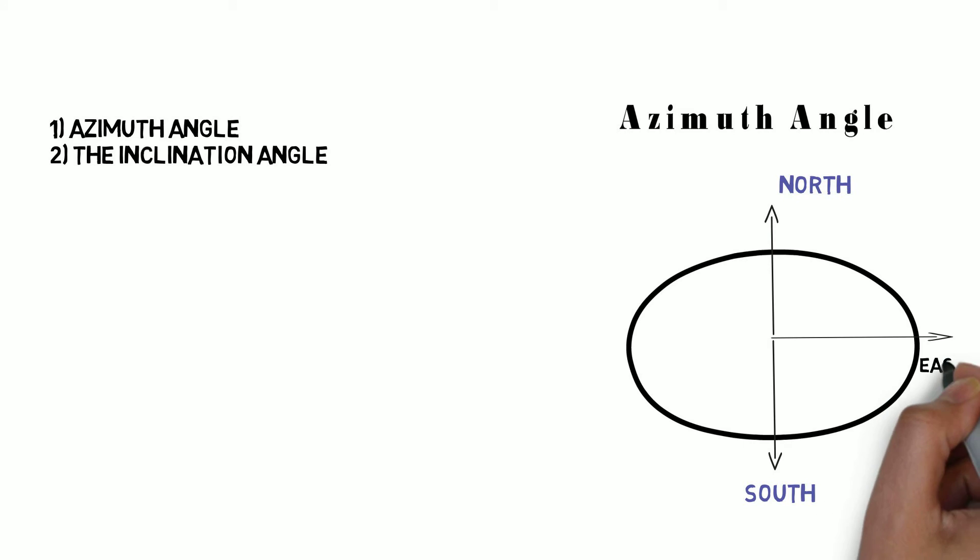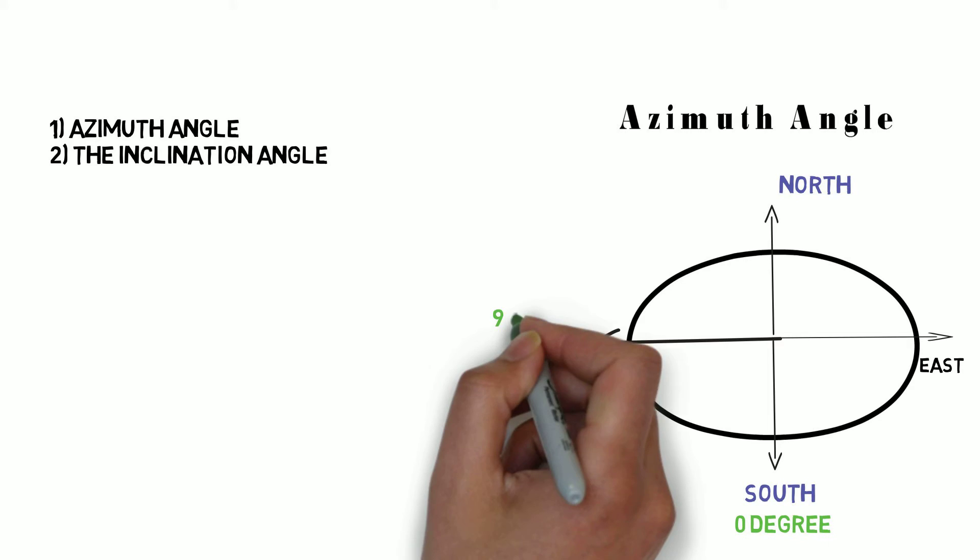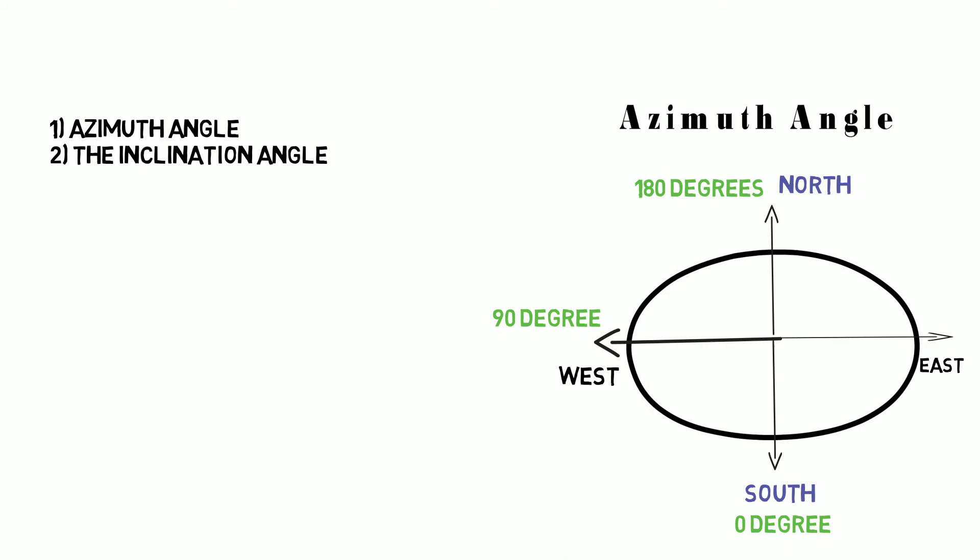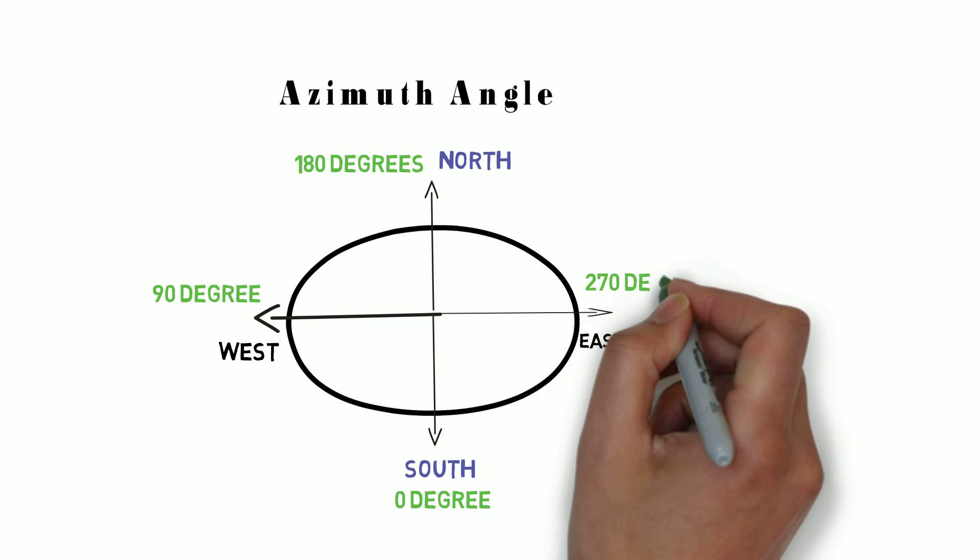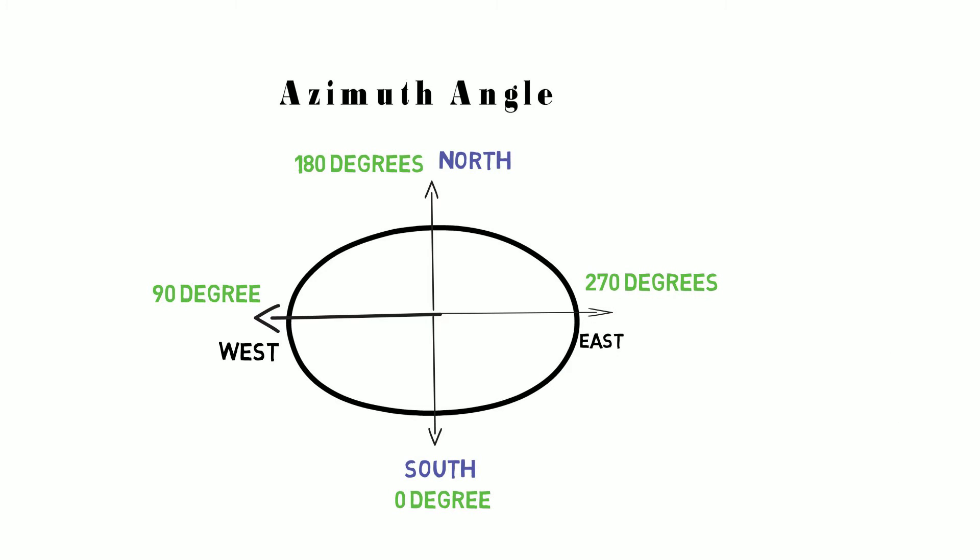Therefore, if a solar panel is facing south, its azimuth angle is 0. If it is facing west, the azimuth angle is 90. If it's facing north, the azimuth angle is 180, and if it's facing east, the azimuth angle will be 270 degrees.